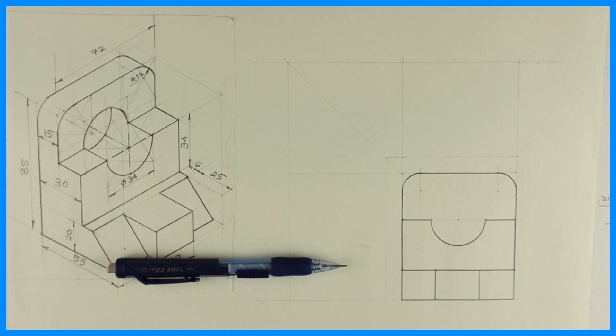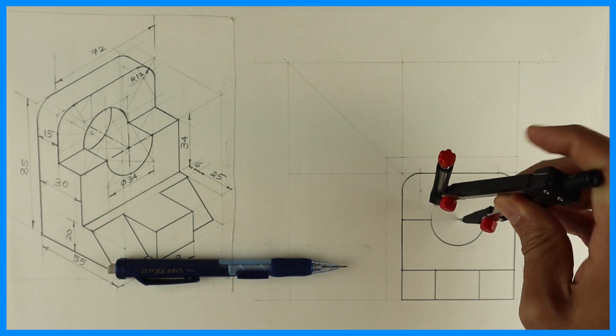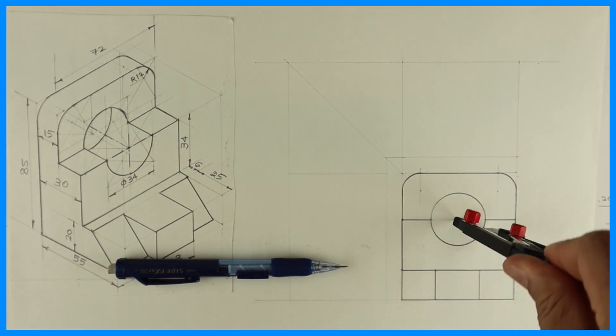And you draw this behind circle also, the same radius. So we are done with front view.